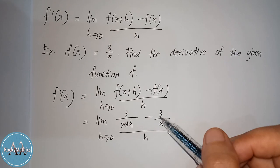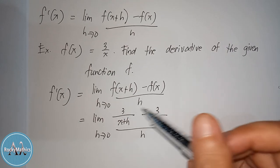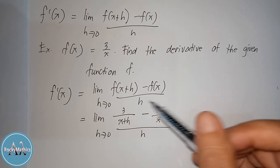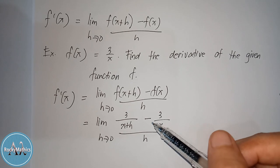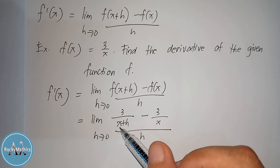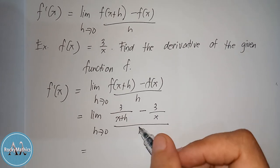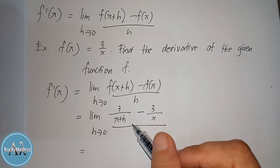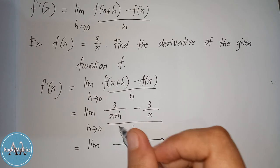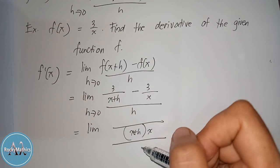Now take note that we need to simplify the numerator. The main numerator of this whole expression contains fractions. So in order to combine them, we follow the rule for subtracting fractions. Since we have different quantities in the denominator — x plus h and x — all we have to do is find the LCD. The LCD here is simply the product of x plus h and x.